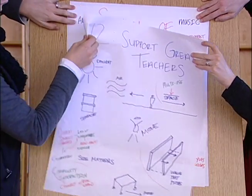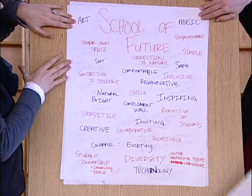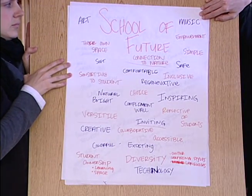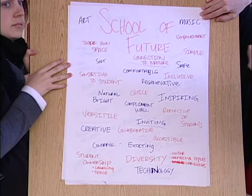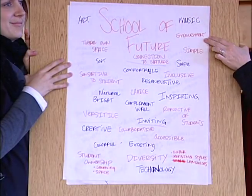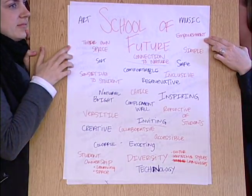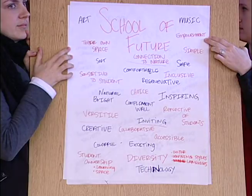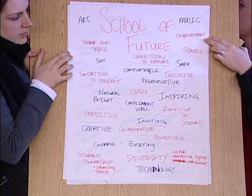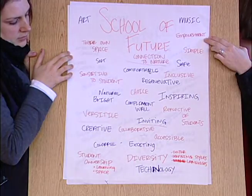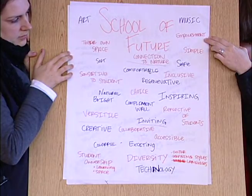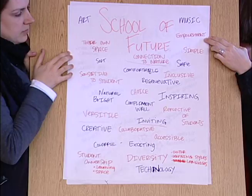We talked about what the school of the future might look like. Our group was very word-heavy, so we kept with the brainstorming approach. The words that kept coming up were connecting, collaborating, being creative, being versatile, and being inspiring. A big one was connection in nature — that was a big theme that came up in our group.